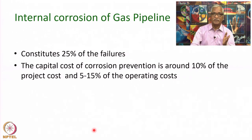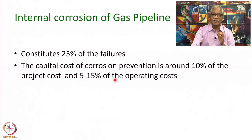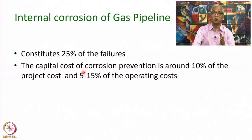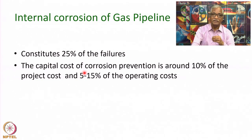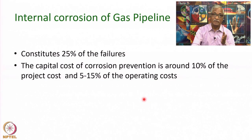The internal corrosion of gas pipelines is also equally important. In fact, 25 percent of failures in gas pipelines are related to internal corrosion. The capital cost of corrosion prevention is about 10 percent of the project cost and 5 to 15 percent of the operating cost, making internal corrosion control of gas pipelines very important.